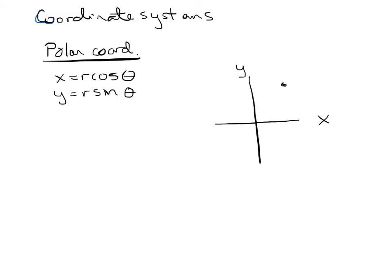And these come from some point that normally we could find by going over x and up or down y. But instead of doing that, we're going to go a certain distance from the origin and a certain angle from the positive x-axis. Theta's always from that positive x-axis.